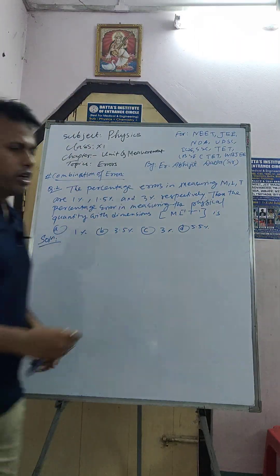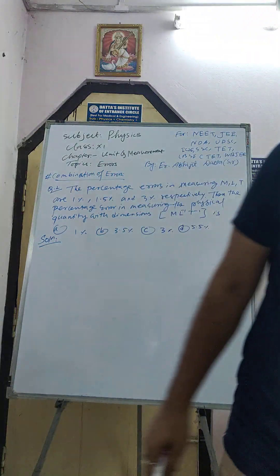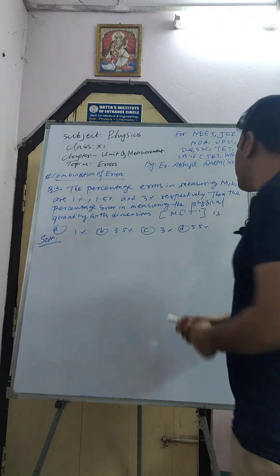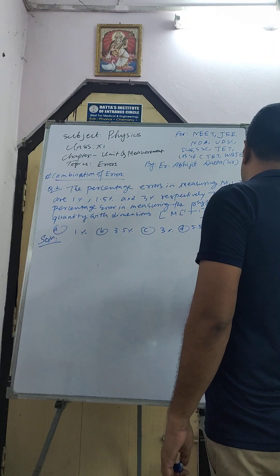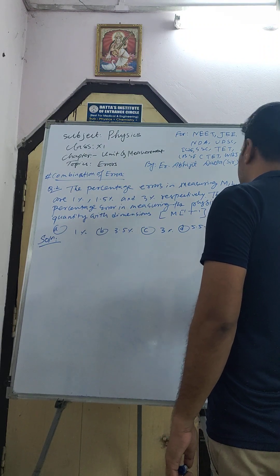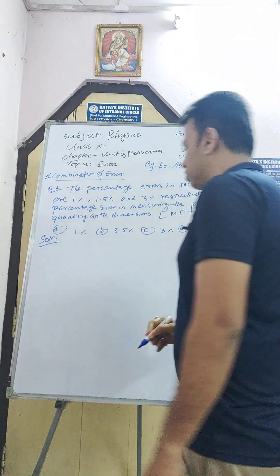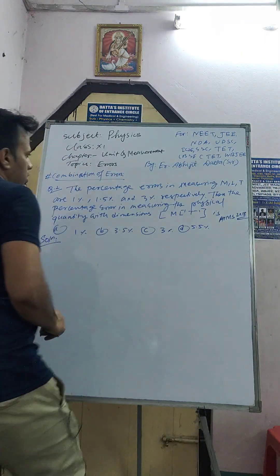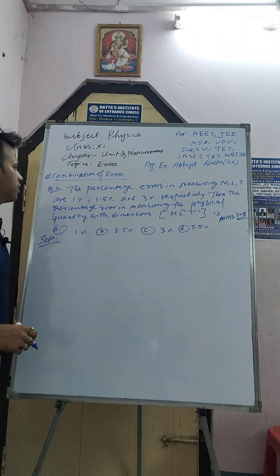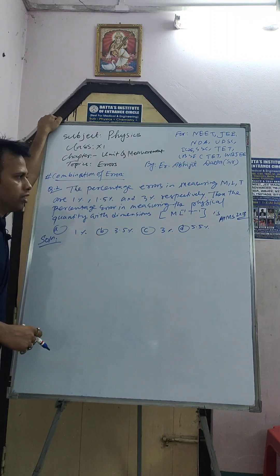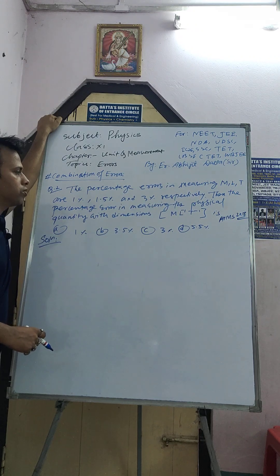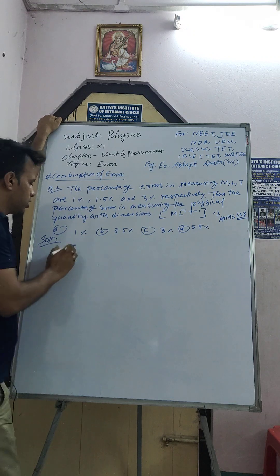Question 2 came from AIIMS 2018: the percentage error in measuring M, L, and T are 1%, 1.5%, and 3% respectively. Find the percentage error in the physical quantity with dimension ML⁻¹T⁻¹. Given: del M by M into 100 is 1%, del L by L into 100 is 1.5%, and del T by T into 100 is 3%.